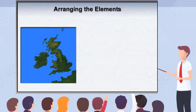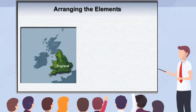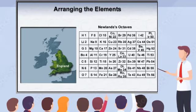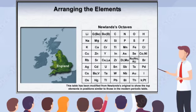In 1865, an English chemist named J.A.R. Newlands devised another pattern for organizing the elements. Newlands arranged the elements in order of increasing atomic mass, and suggested there was a repeating pattern in the properties of every eighth element. The table on the screen is adapted to show elements in positions similar to those in the modern periodic table.